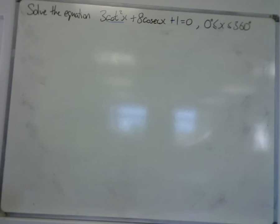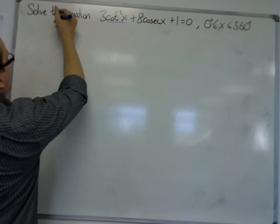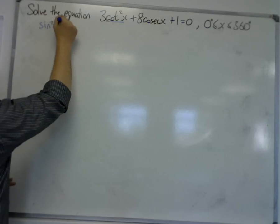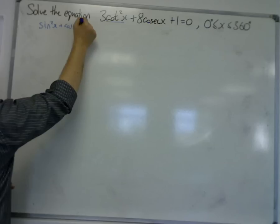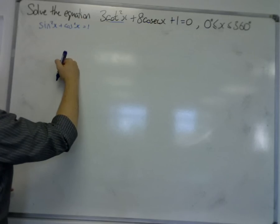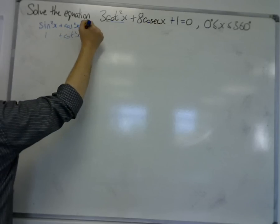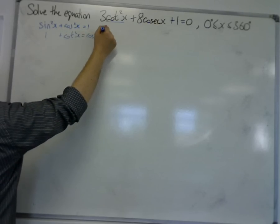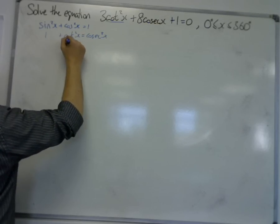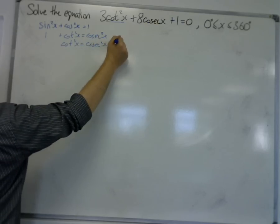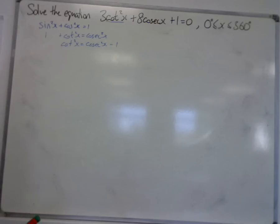Cot squared comes from, if you look at sin²x + cos²x = 1, cot squared comes from dividing through by sin squared, so that's 1 + cot²x = cosec²x. So cot²x is cosec²x - 1, and we can make that replacement.